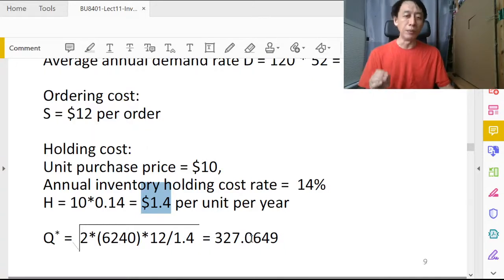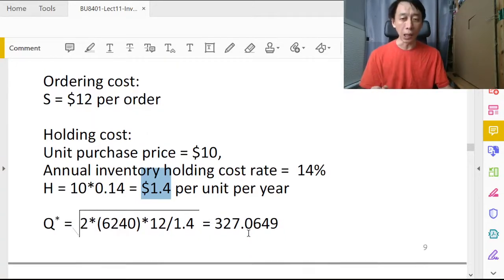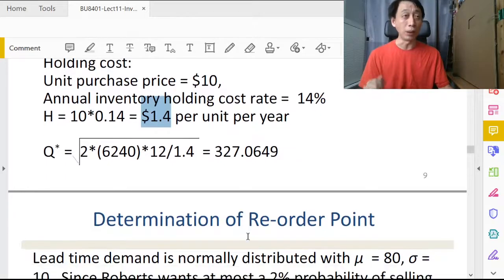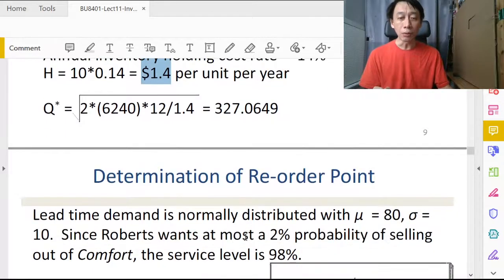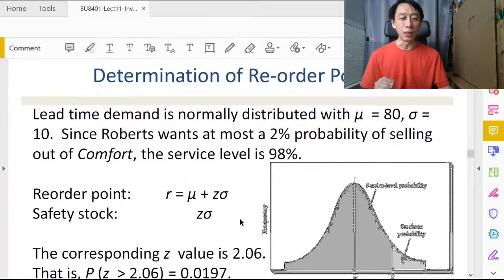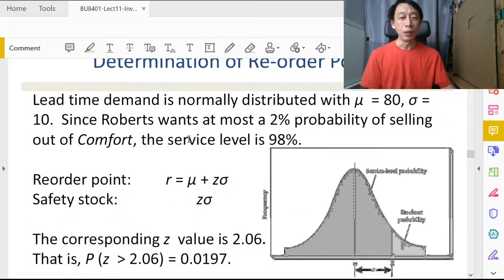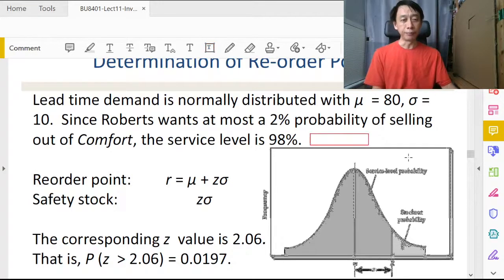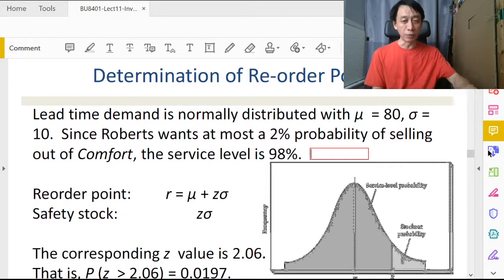Next up is to determine the R, the reorder point, and to do that we need to look at the distribution. Lead time demand distribution is already given as 80 or normally distributed, so we have D of L being equal to or has a distribution of normal distribution with a mean of 80, standard deviation of 10.